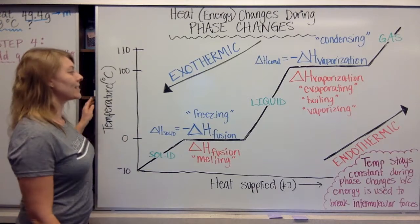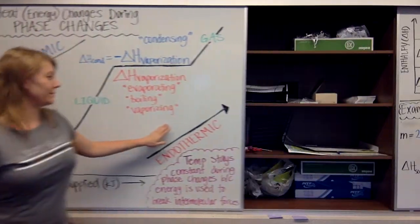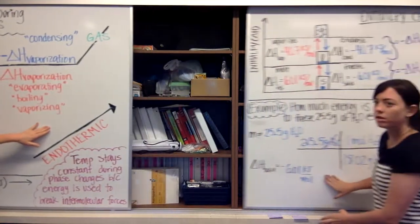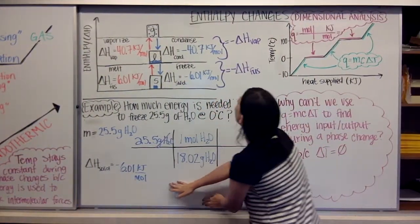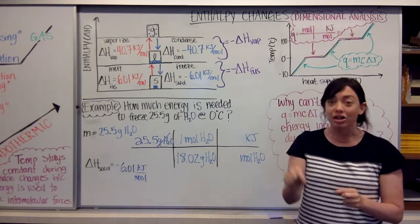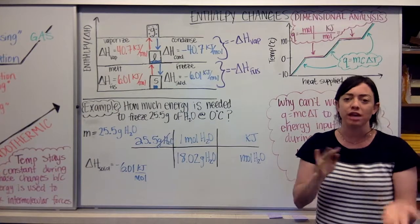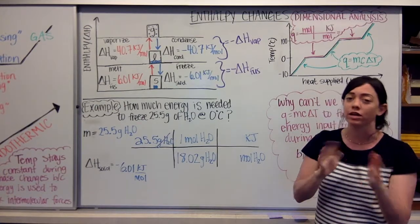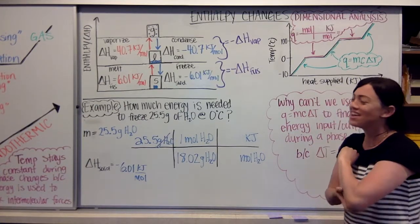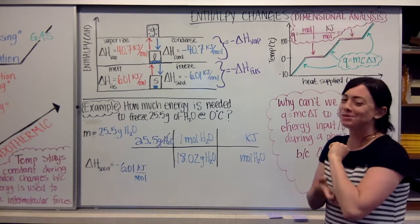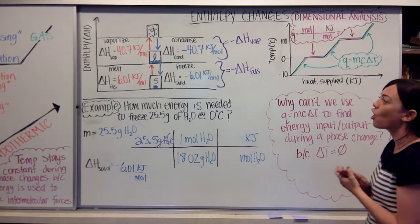We'll see those values in a second. I'm going to talk a little bit about how much energy it actually takes to go through a phase change and how those values are the same — kind of like our 4.184 that we use for the specific heat of water; you're going to memorize it because we're going to use it so much.